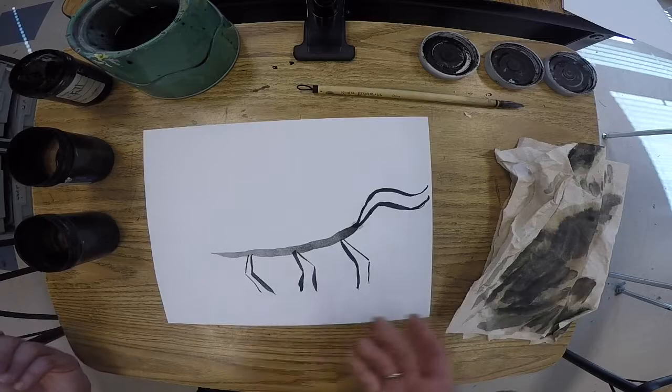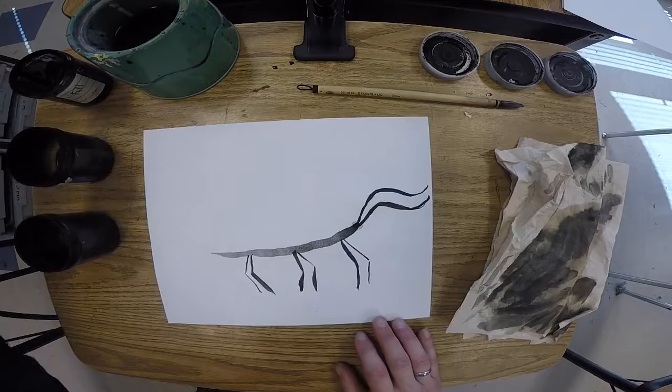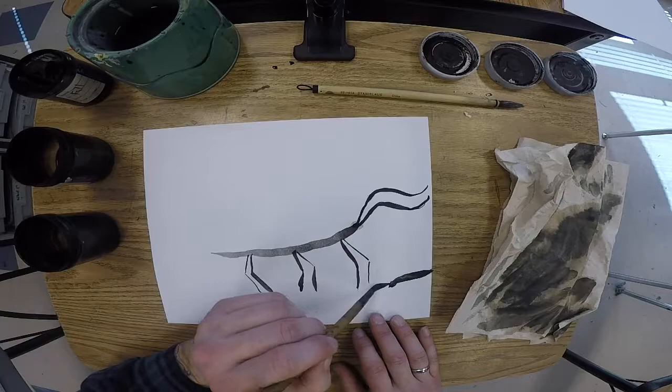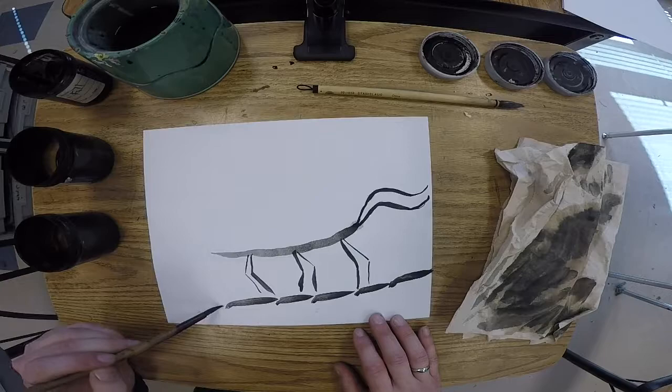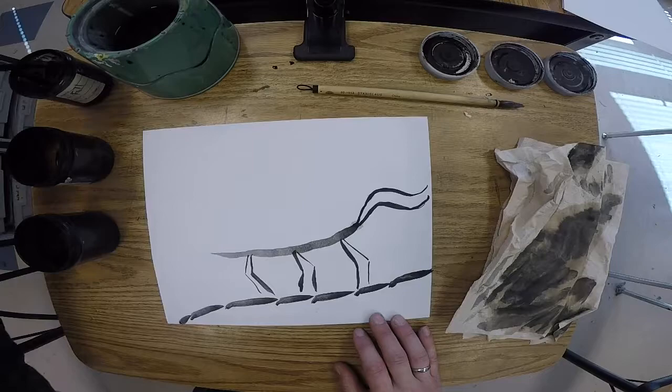Now right now he looks kind of plain. He needs a stick to walk on, right? So we're going to use that thin bamboo stroke. And he's just walking along looking for some good stuff, some good leaves, some good foliage to munch on.